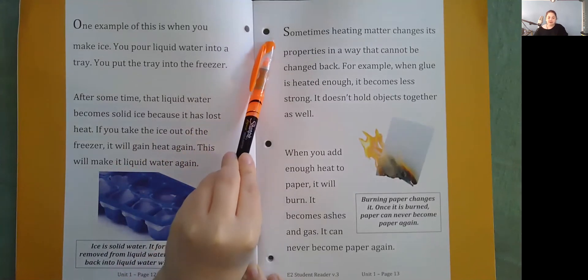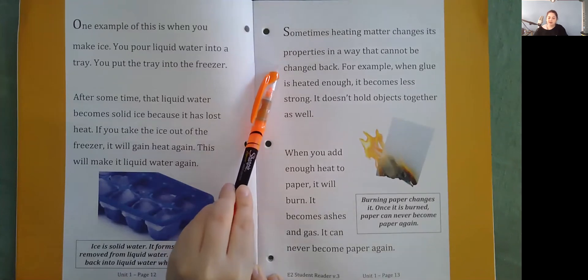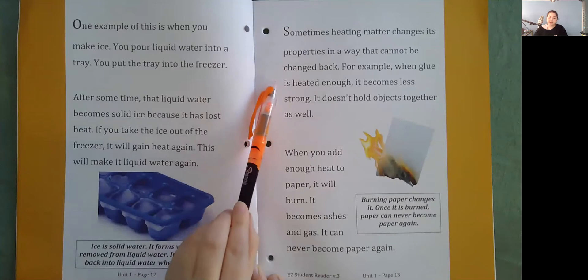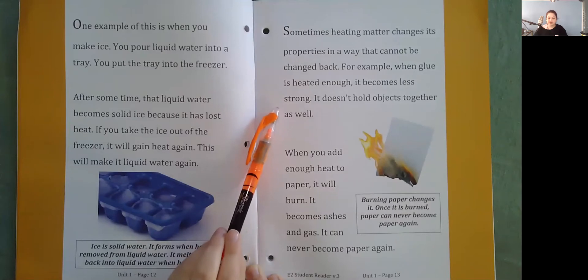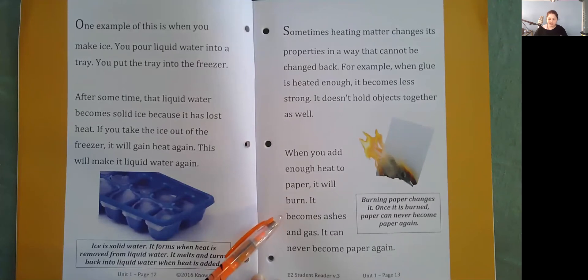Sometimes heating matter changes its properties in a way that cannot be changed back. For example, when glue is heated enough, it becomes less strong. It doesn't hold objects together as well. When you add enough heat to paper, it will burn. It becomes ashes and gas. It can never become paper again.